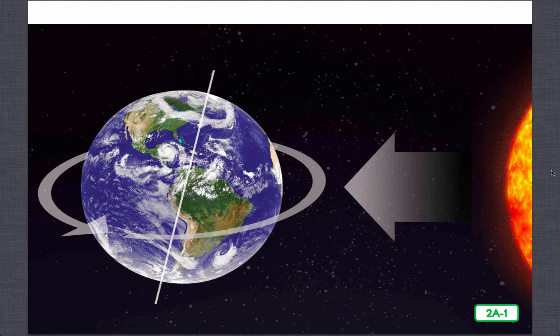Sunset eventually occurs when certain parts of Earth turn or rotate away from the sun and nighttime begins. This cycle continues over and over again.